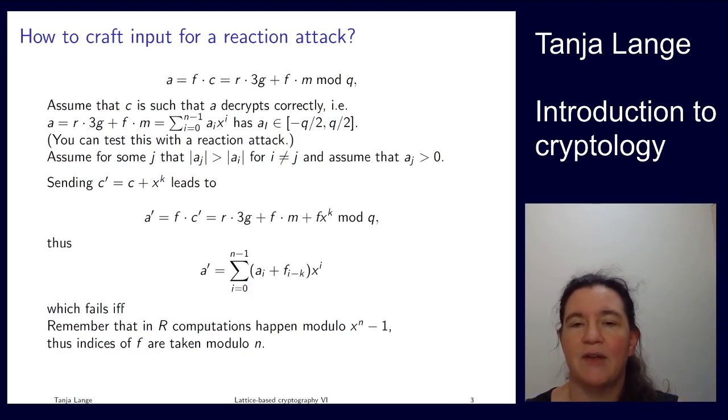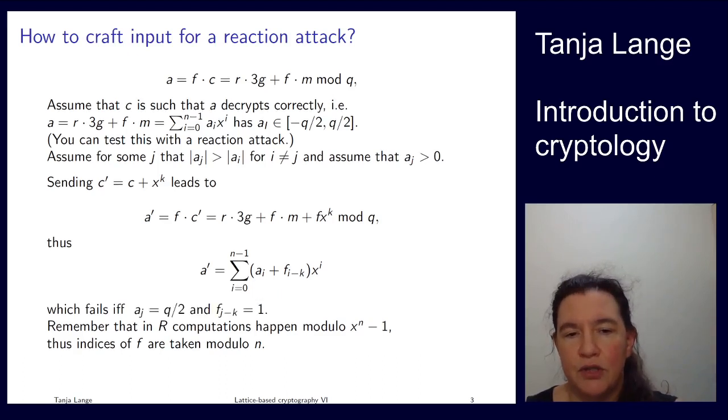You can do the minus one again. So let's generalize first to other powers of x. So if you have kth power of x coming in there, then it changes the index to i minus k here. Same as what we had now with x to the zero first and then x to the one. And again, indices are taken mod n. And then this fails if a_j is q over 2 and if the coefficient that goes with a_j, which is now f_{j minus k}, is plus one.